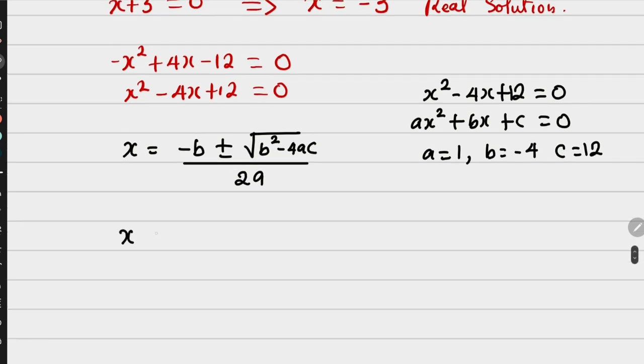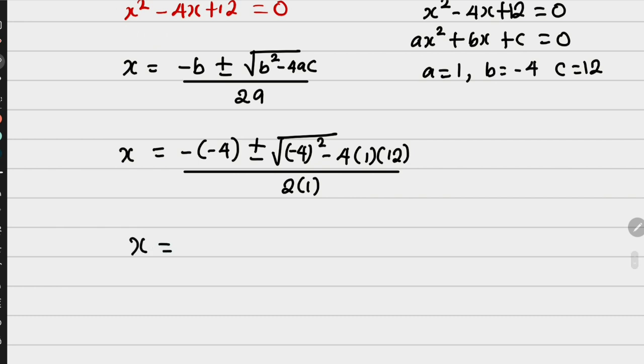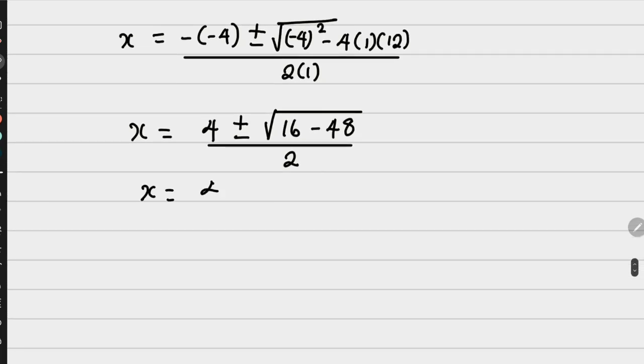So putting it here, we are going to have x is equals to minus into minus 4, plus minus root of minus 4 all squared, then minus 4 into 1 into 12. Now everything here is all over 2 into 1. We are moving. So x is now going to be 4 plus minus, this is square root of 16, then I have minus 48 all over 2. Now going further, I am going to have x is equals to 4 plus minus root of minus 32 all over 2.